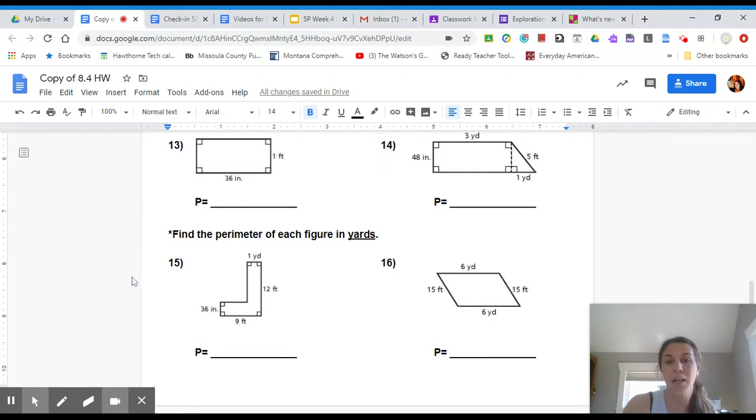So the first thing, if I'm looking at number 15, perimeter means distance around. Before I even worry about breaking that up, I noticed that some are in yards, some are in feet and some are in inches. So what's probably the first step? Yeah, let's at least make them all into yards first.